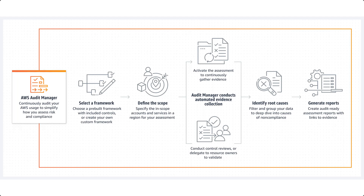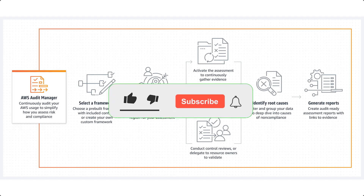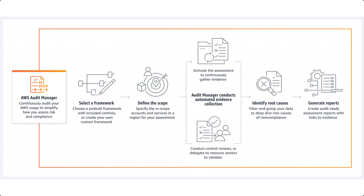The Audit Manager conducts automated evidence collection and also conducts control reviews, or you can delegate resource owners to validate those evidence collections. Once all the evidence is collected, you can identify root causes — for example, what's causing something to fail, or if there's a security risk or a non-compliance issue. You can filter and group your data to dive deeper into causes of non-compliance, which eliminates manual effort. Finally, it generates audit-ready reports — assessment reports with links to evidence — that you can present to stakeholders.